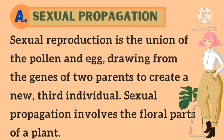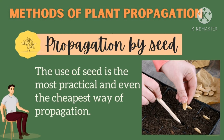Let's go with sexual propagation. Sexual reproduction is the union of the pollen and egg, drawing from the genes of two parents to create a new third individual. Sexual propagation involves the floral parts of a plant. Seeds are typically produced from sexual propagation within a species because genetic combination has occurred. One of the methods of plant propagation is propagation by seed.